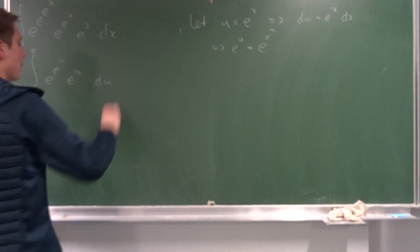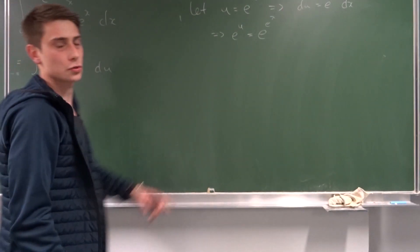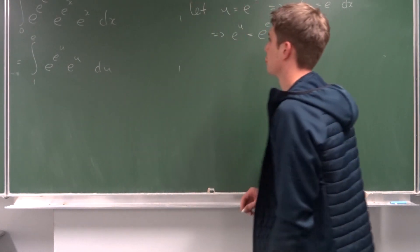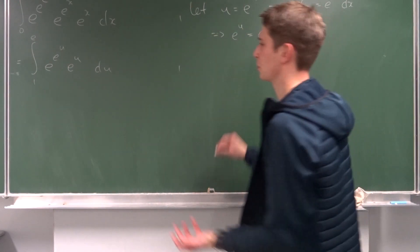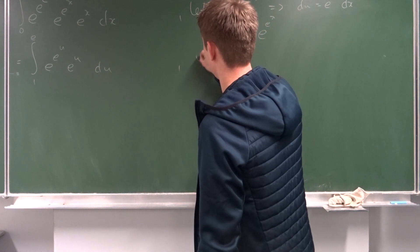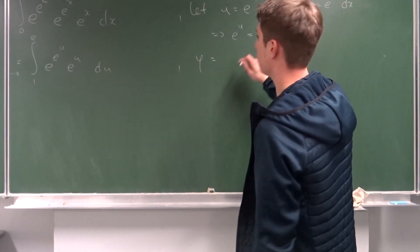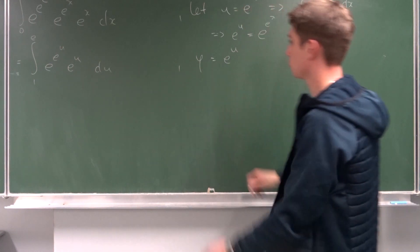That reduces pretty nicely. And now, we are going to introduce the second substitution. So, we are going to call it... Because I'm a badass, I'm going to call it phi. So, let phi equal to... Well, we are going to let it equal to e to the u.